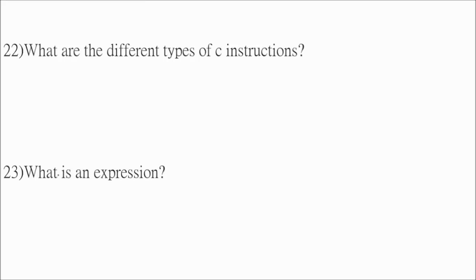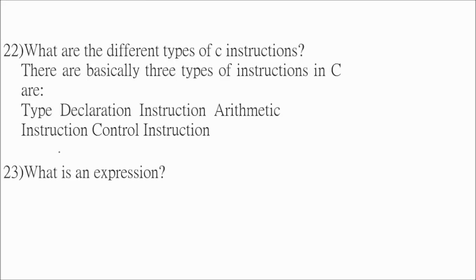Then you may be asked what are the different types of C instructions? There are basically three types of instructions in C. Type declaration instruction, arithmetic instruction, control instruction. These are type declaration instruction, arithmetic instruction, and control instruction.